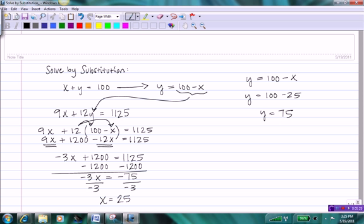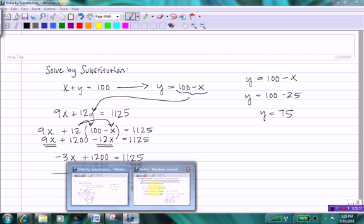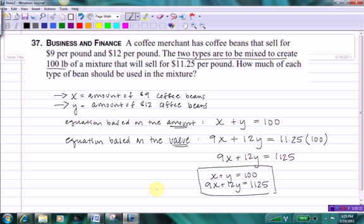Now let's go back to our original problem and make sense of these values. We found that X equals 25. And since X equals the amount of $9 coffee beans in our statement, that implies that the amount of $9 coffee beans is going to be 25 pounds. And since Y represented the amount of $12 coffee beans, and we found Y to be 75, that means that the amount of $12 coffee beans will be 75 pounds.